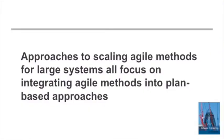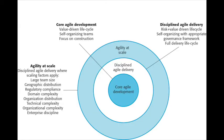There are a number of approaches that have been proposed for the development of large and complex systems, and they all have to think about how plan-based and agile development can be integrated. A number of companies have looked at the issues of scaling up agile, and one of the most useful models, I think, is the model produced by IBM, which looks on this as a three-stage process.